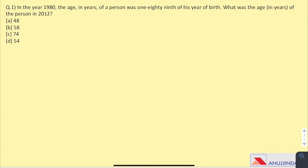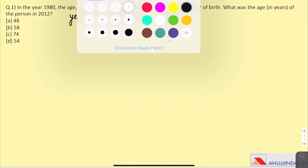Question 1. In the year 1980, the age in years of a person was 1/89th of his year of birth. What was the age of the person in 2012? Let the year of birth be 89x. Now, to understand the question better, I'll give you an example.